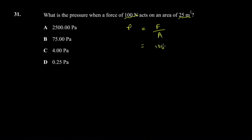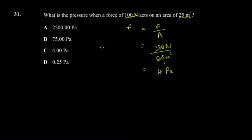Your force is 100 newtons and your area is 25 square meters. Both are standard units, so we get the standard unit for pressure. 100 divided by 25 gives you 4 pascals. Pascals is the unit for pressure, so the answer is 4.00 — simply 4.